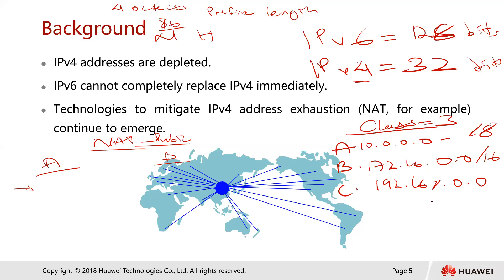Class C starts from 192.168.0.0 to 192.168.255.255, and the forward slash is /24. Why? Because the first three octets represent the network bits.